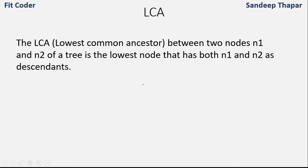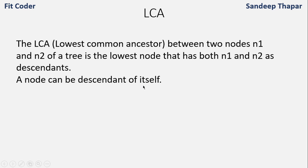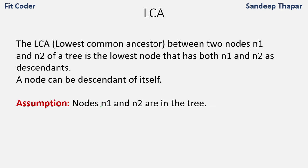LCA of two nodes N1 and N2 is the lowest node that has both N1 and N2 as descendants. Also, a node can be a descendant of itself. Here we are taking the assumption that both the nodes are present in the tree.